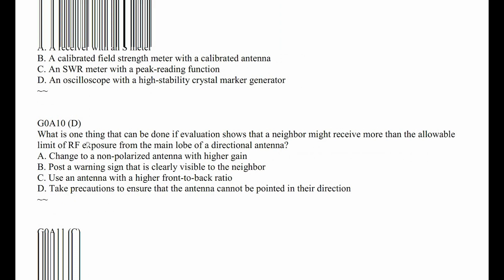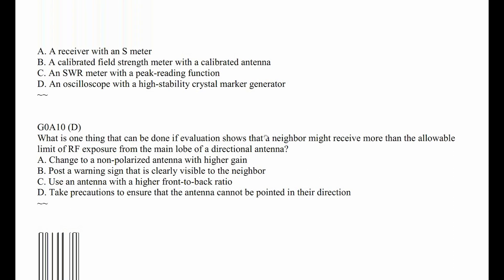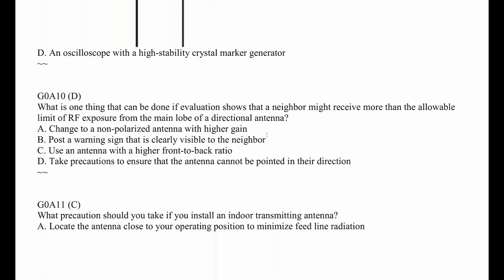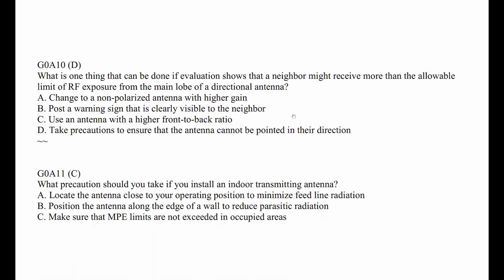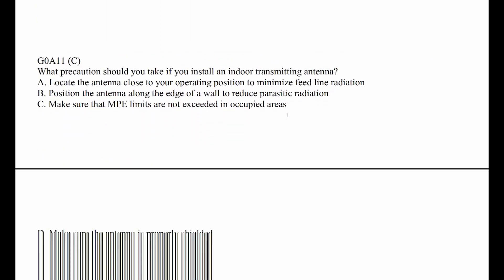G0A10: What is the one thing that can be done if evaluation shows that a neighbor might receive more than the allowable limit of RF exposure from the main lobe of a directional antenna? The answer is: take precautions to ensure that the antenna cannot be pointed in their direction. But how in the world would you do that? You've got a rotator that turns your antenna 360 plus 90 degrees — 450 degrees. It's one thing to say don't point it their direction; it's another to mechanically stop it.